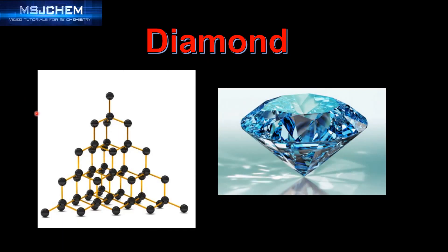Next we'll move on to diamond. Diamond has a giant covalent structure. Each carbon is bonded to four other carbons in a tetrahedral arrangement, giving a bond angle between carbon atoms of 109.5 degrees. Diamond is a very hard substance due to the strong covalent bonds between the carbon atoms.